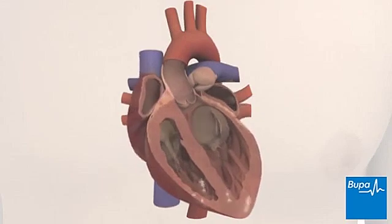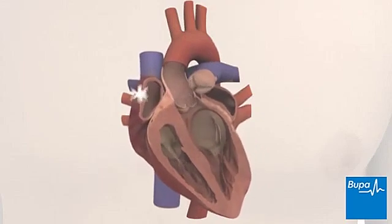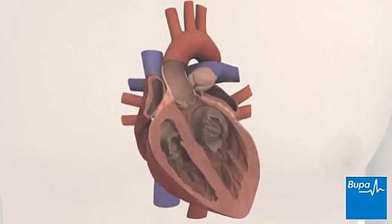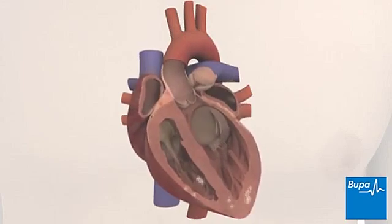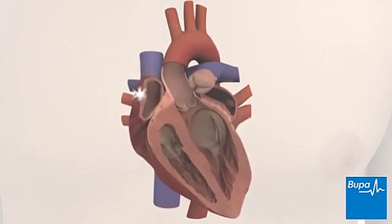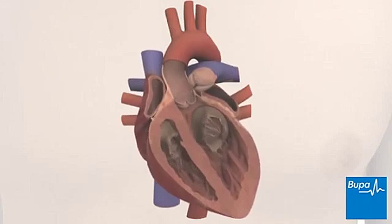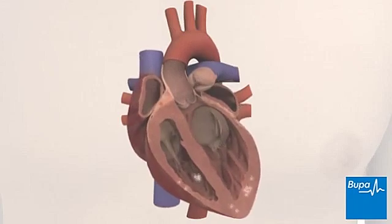Nerves supplying the heart change the rate at which impulses are sent across the heart muscle to meet the needs of the body.